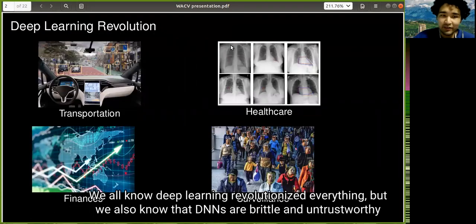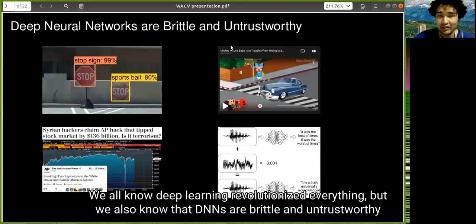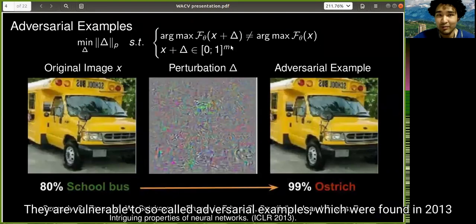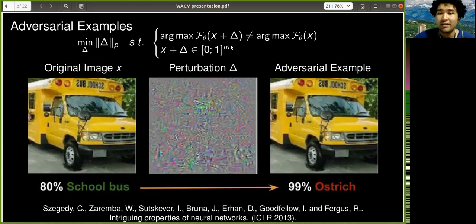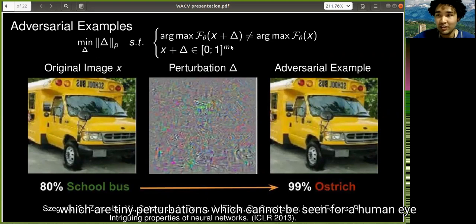We all know deep learning revolution and servers, but we also know that deep neural networks are brittle and untransferty. They are vulnerable to so-called adversarial examples which were found in 2013 and which have tiny perturbations which cannot be seen by the human eye.